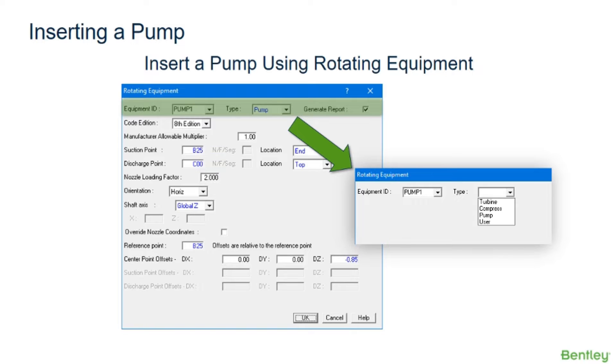AutoPipe then filters the dialog to include fields related to the type of equipment selected. Once the equipment type is specified, whether it's a turbine, compressor, pump, etc., point names can be assigned to locations where the piping system meets the device.